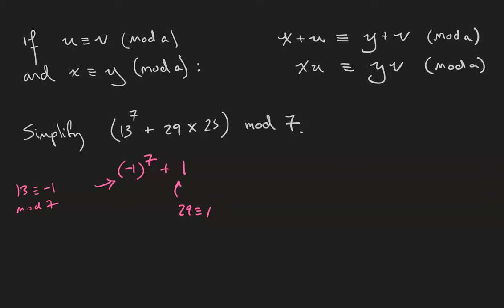25 is 4 off of 21. So 25 is equivalent to 4. This number is equal to 4 minus 1, because negative 1 to the 7th power is negative 1. 4 minus 1 is 3. So 3 is congruent to 13 to the 7 plus 29 times 25 mod 7.